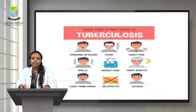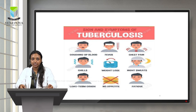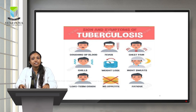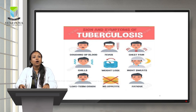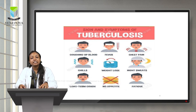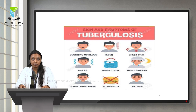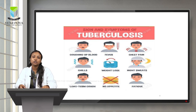Signs and symptoms — the clinical features of pulmonary tuberculosis — include coughing up blood, fever, chest pain, chills, weight loss, night sweats, long-term cough, no appetite, and fatigue. These are the significant signs and symptoms of pulmonary tuberculosis.